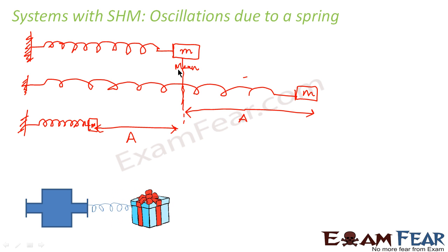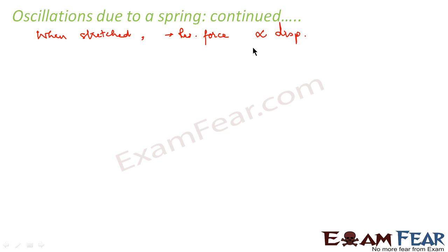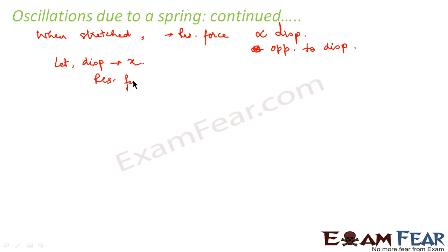Just that since a spring comes into picture, there are certain things which change — let us look at the mathematical part. When we stretched the object to the extreme end, it was subjected to a restoring force. This restoring force was proportional to displacement and acted towards the mean position, that is, opposite to displacement. Now let us suppose the displacement is x. So the restoring force F is given by minus kx — minus shows the direction and kx shows the proportionality of F with x. So this k is nothing but the spring constant.